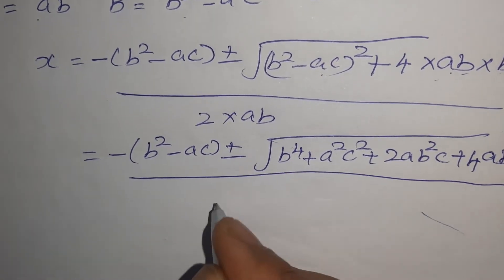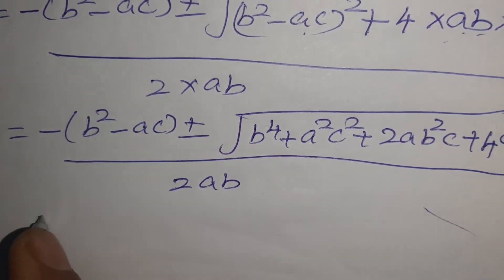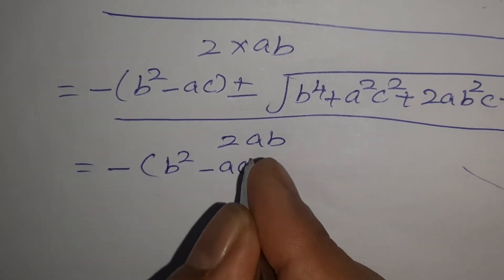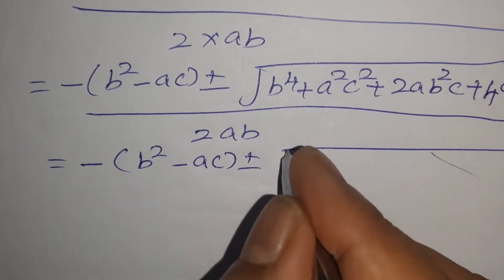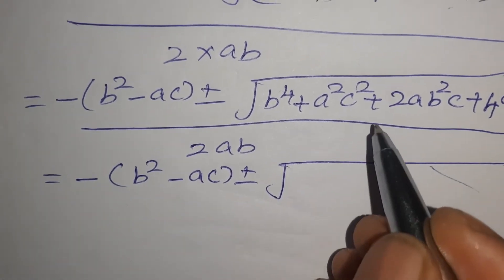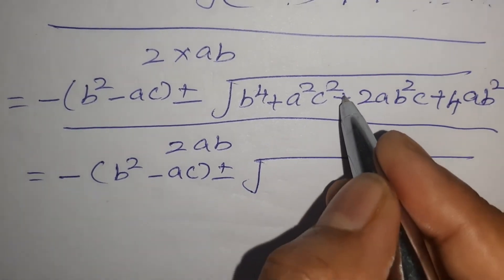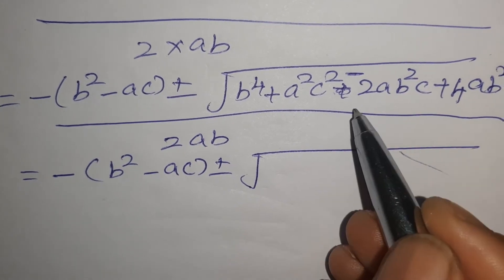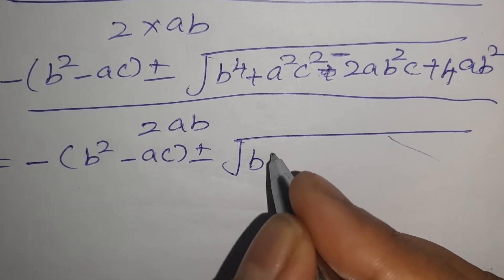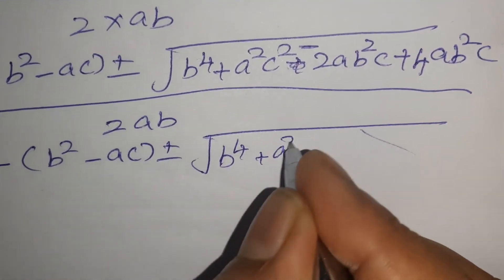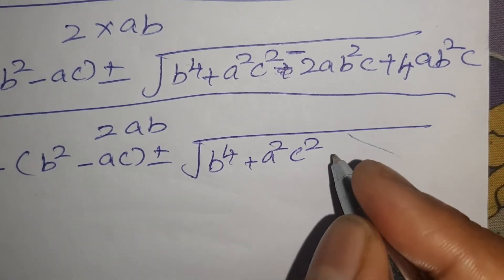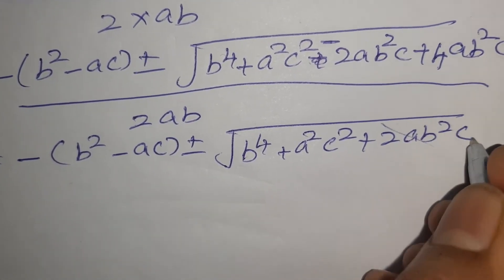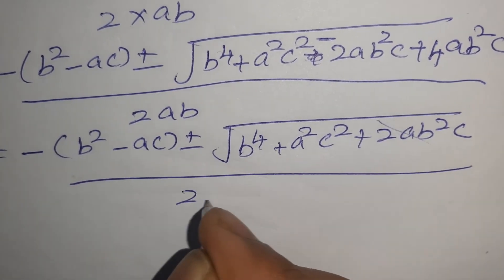Divided by 2AB. So now that is equal to: −(B² − AC) ± √(B⁴ + A²C² + 2AB²C), divided by 2AB.